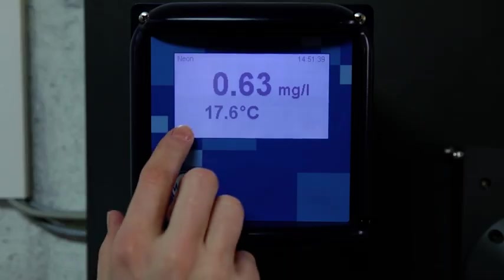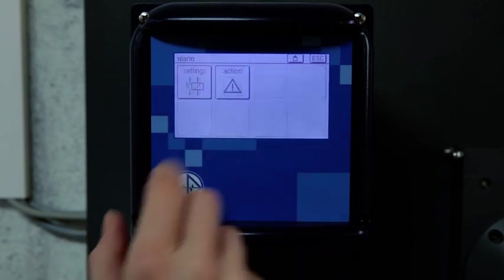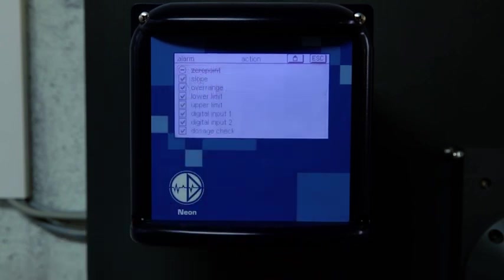The instrument has various alarm functions. In the alarm action menu, you assign the alarm relay to the events: Slope, Measuring range over range, Limit values, Digital inputs, and Dosage check. Factory set, all events are assigned. If an event occurs, the alarm relay, relay three switches.